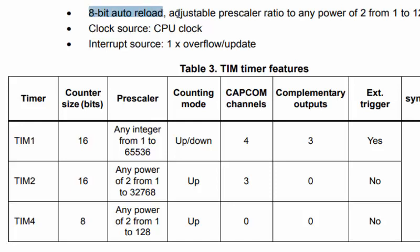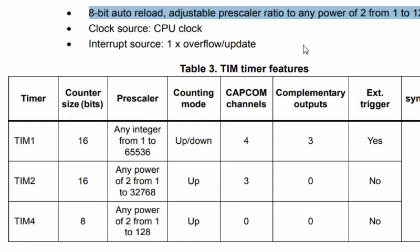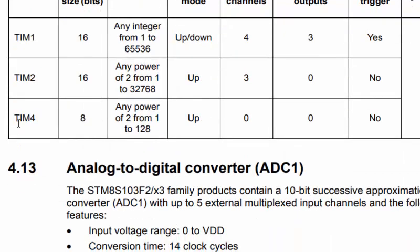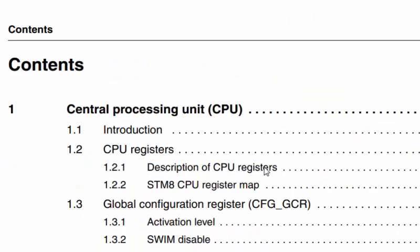We now know two things about this timer: it has a reload register and a prescaler register. We also see from the table that Timer 4 only counts upward — it does not count downward like Timer 1. We need to find the names of these registers. Let's move on to the STM8S family reference manual and scroll down to find Timer 4.